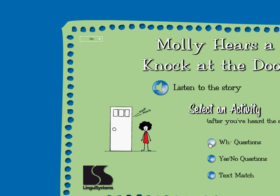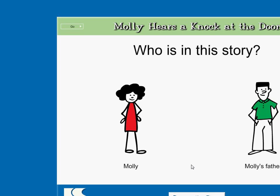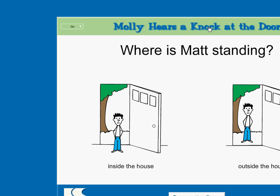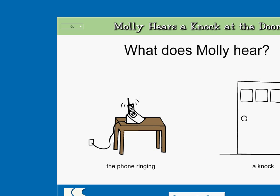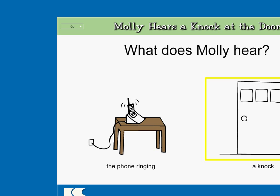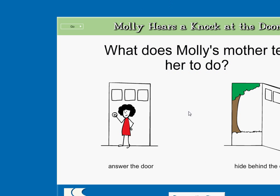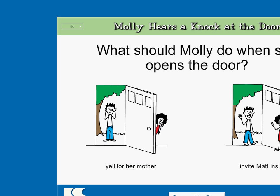Molly hears the knock at the door. Who is in this story? Molly. Molly's father. Correct! Where is Matt standing? Inside the house. Outside the house. You got it! What does Molly hear? The phone ringing. A knock. Right on! What does Molly's mother tell her to do? Answer the door. Hide behind the door. Super! What should Molly do when she opens the door? Yell for her mother. Invite Matt inside. Right on!